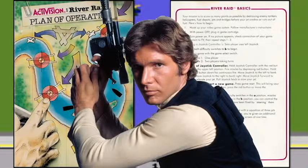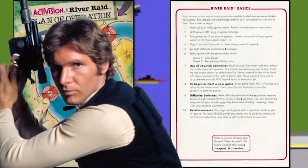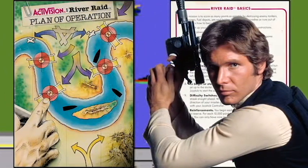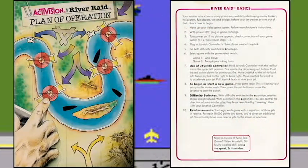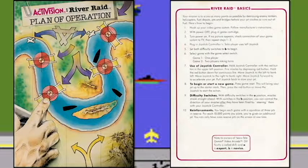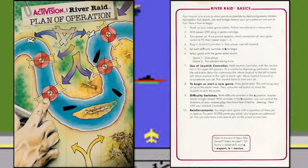The solo player will use the left joystick, and if you're Han Solo, I guess you use both of them — because Han Solo is cool, come on. Set both difficulty switches to B to begin with. If you don't know who Han Solo is, get out of here — that's all I gotta say. Step six: select the game with the game select switch. Game one is one player, game two is two players taking turns. Kind of hard to remember.